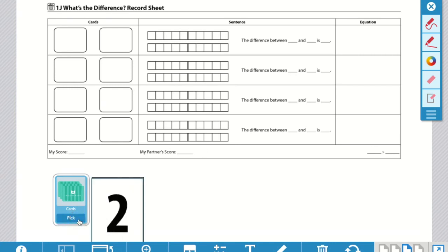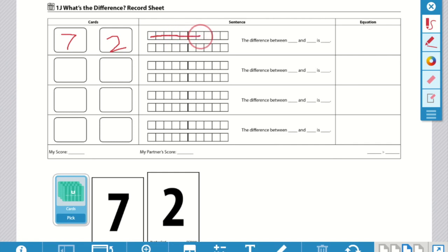Partner one will pick two cards. Each of you will have your own score cards and you'll each solve your own problems. So partner one has seven and two. Mark it in the boxes. On your number rack, you can use seven on the top and two on the bottom. What is the difference between seven and two? That's right, it is five. And the equation is seven minus two equals five. Partner two will do the same and communicate to their partner.